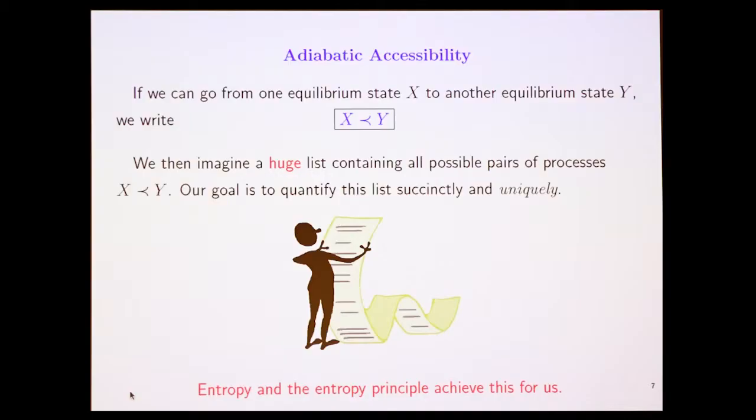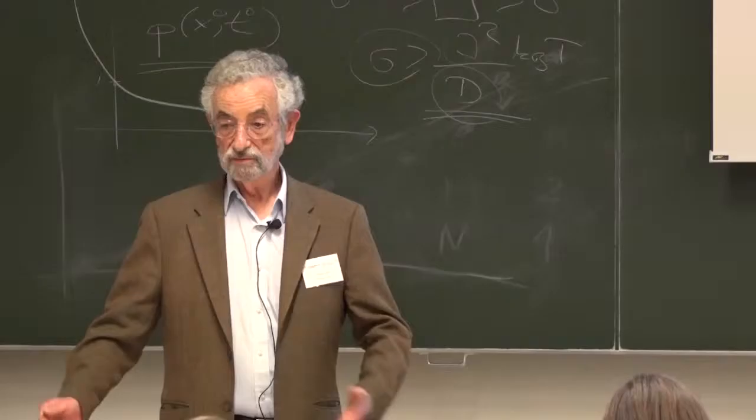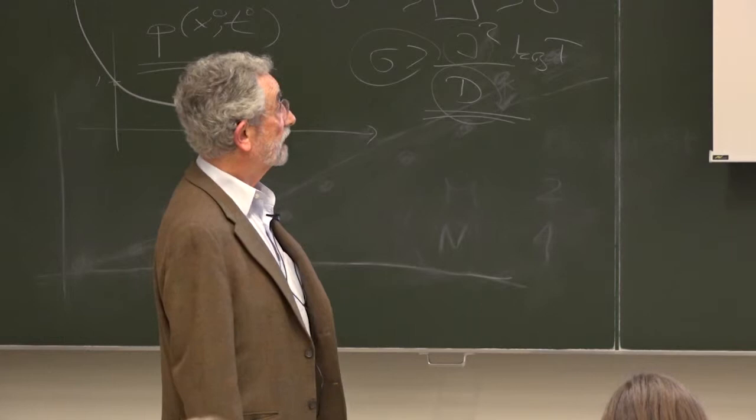One number, which you attach to the state of the system, or all systems in the universe. So every system in the universe has this number attached to it. It's stamped on it, s. And the entropy principle, this is what we would like to achieve. The entropy principle is that for every equilibrium state x of every system, there is a number s of x, called entropy, which has the following properties, key properties. X precedes y if and only if s of x is less than or equal to s of y. And this function, this is called monotonicity, and this function is unique.